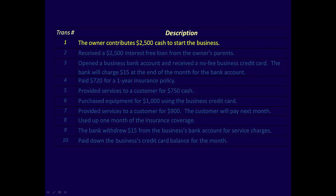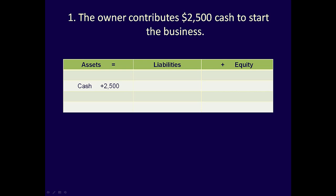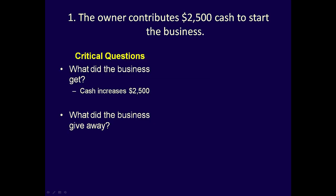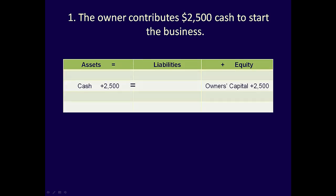Transaction 1: The owner contributes $2,500 cash to start the business. What did the business get? Cash of $2,500, which is an asset because it's owned, has future benefit for the business — it can be used to help generate revenue — and it is due to a past transaction. The cash account increases by $2,500. What did the business give away? They gave away part of the business — ownership in the business. That's equity, which is now owed to the owners. The account we use to represent ownership in the business is owner's capital, which is increasing because the business owes more to the owner than before. Owner's capital increases by $2,500.